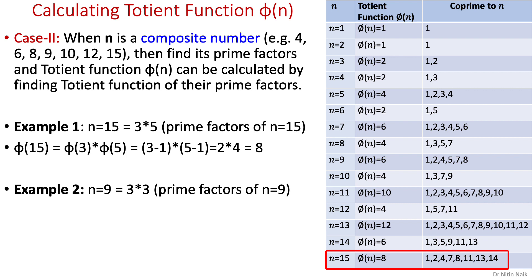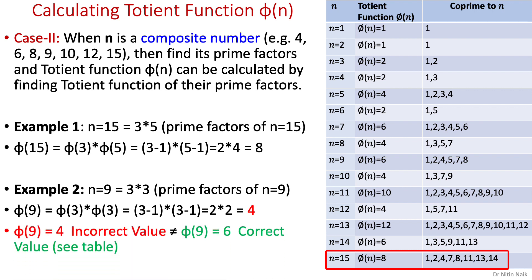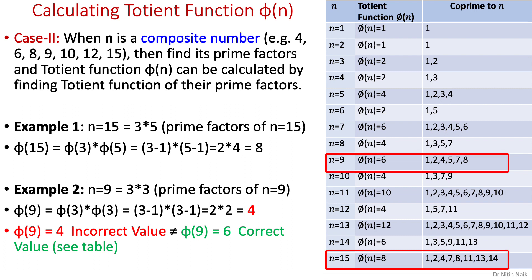For example, calculate the Totient function of composite number 9. Its prime factors are 3 and 3, giving (3 minus 1) times (3 minus 1) equals 4. But 4 is incorrect — the correct value is 6, which we can verify from the table. This illustrates a limitation of the simple factorization approach.